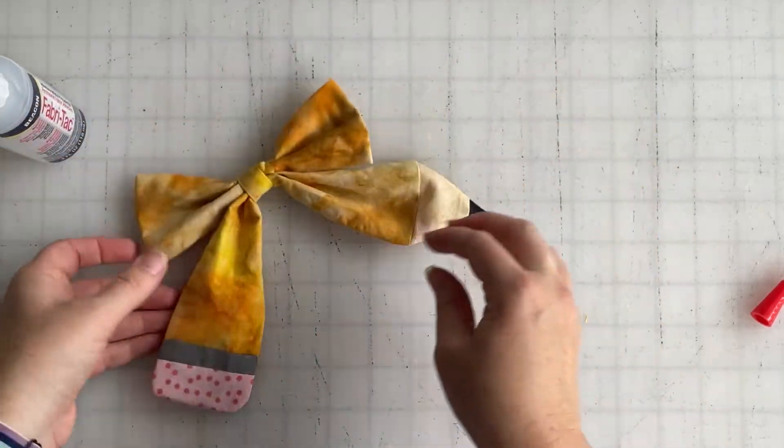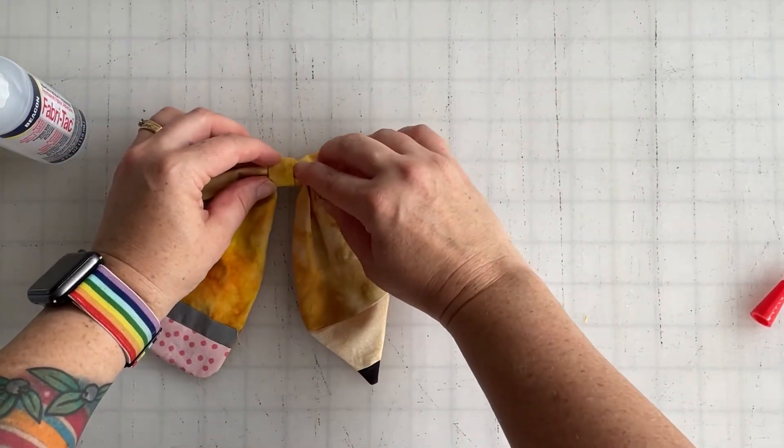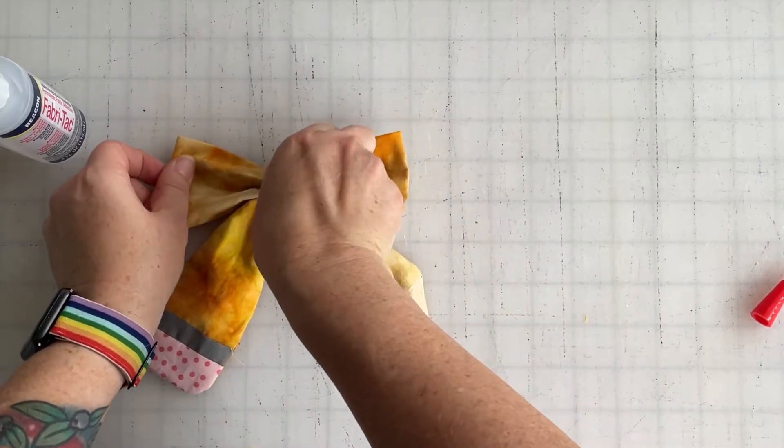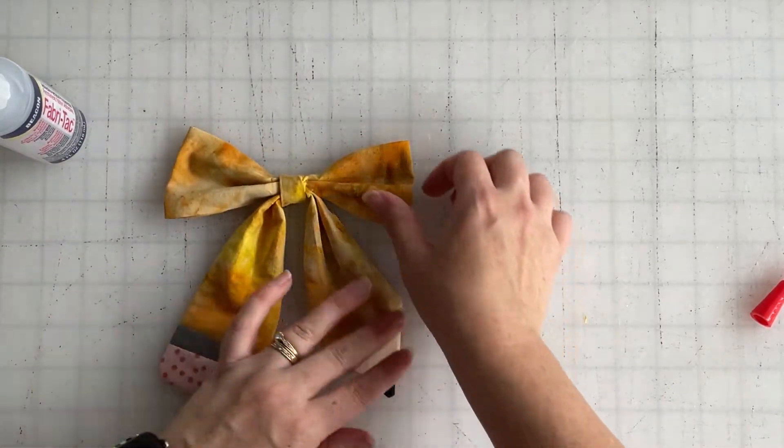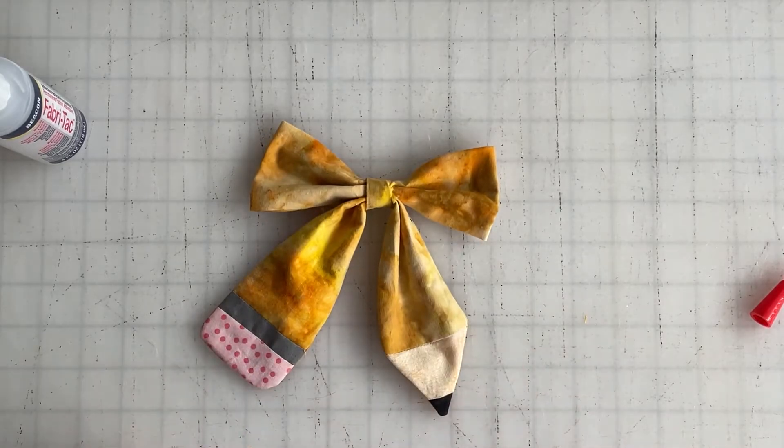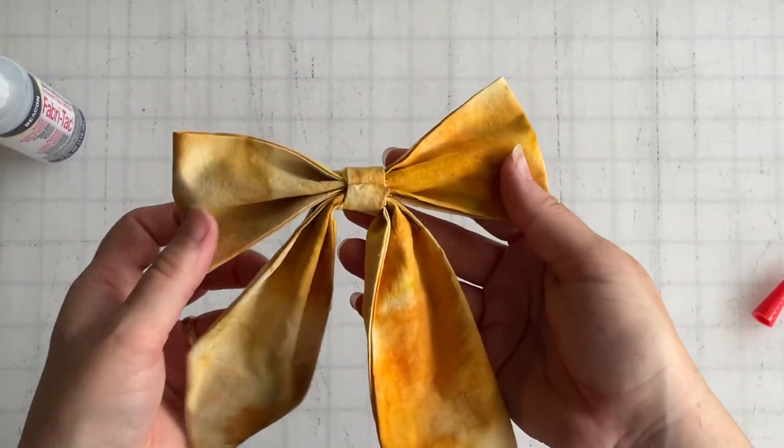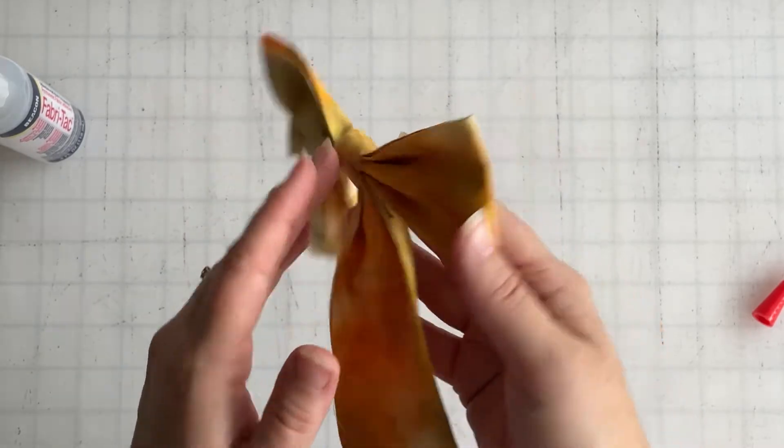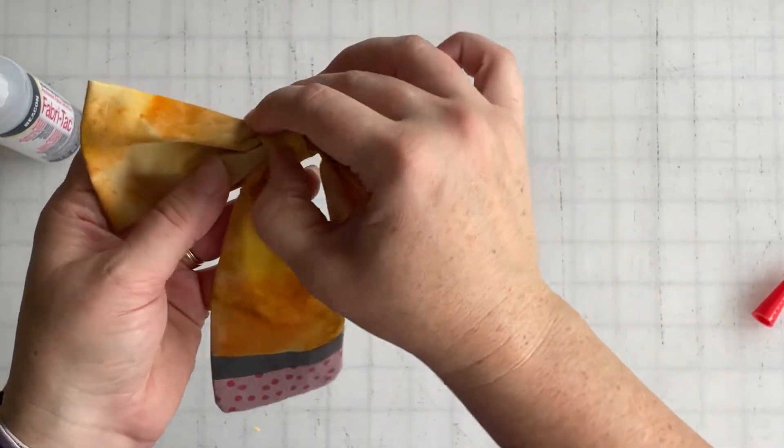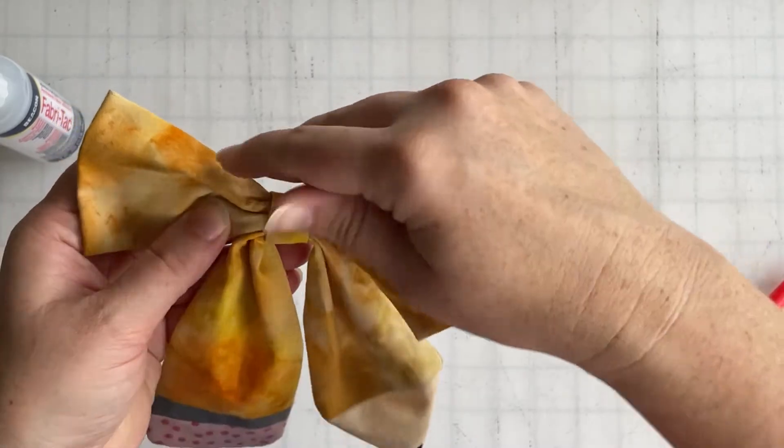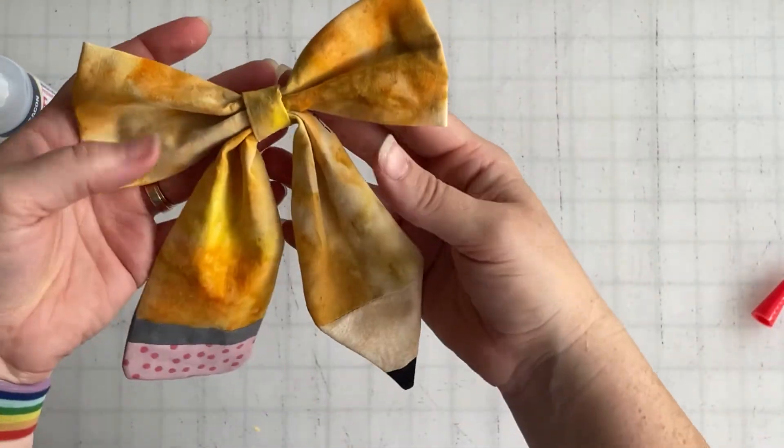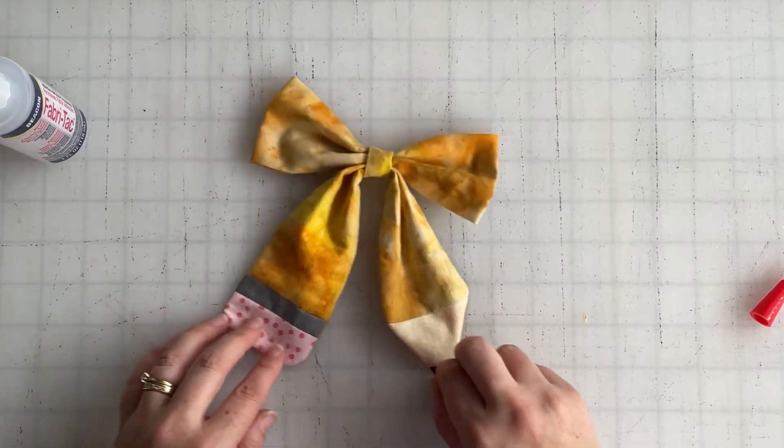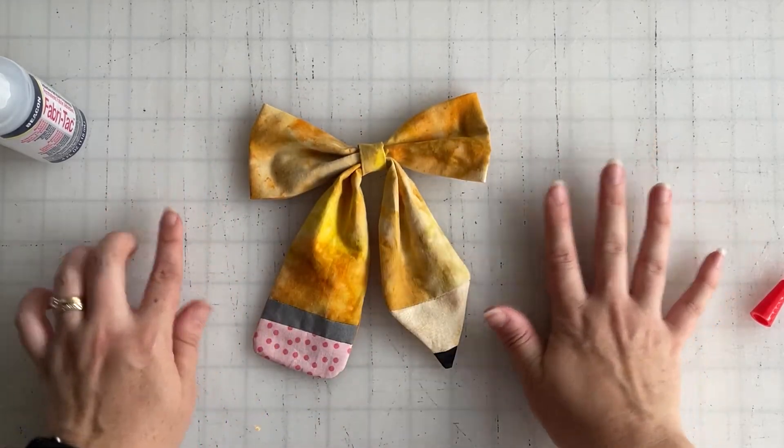Here is our finished adorable little bow. You see how the raw edges are closed in on the back, and on the front everything is covered up and enclosed and you've got an adorable little bow.